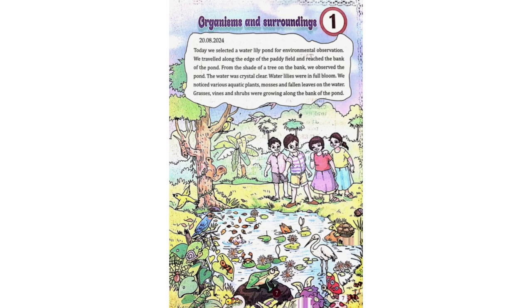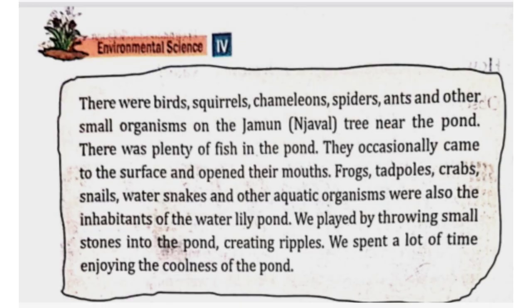Grasses, vines and shrubs were growing along the bank of the pond. There were birds, squirrels, chameleons, spiders, ants and other small organisms on the jamun tree near the pond.